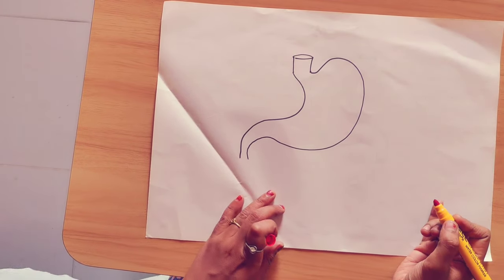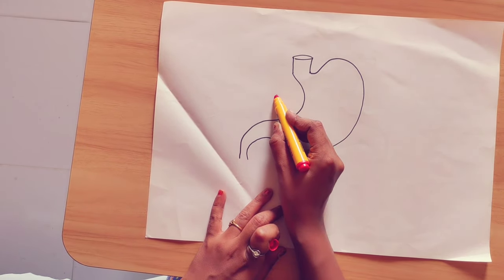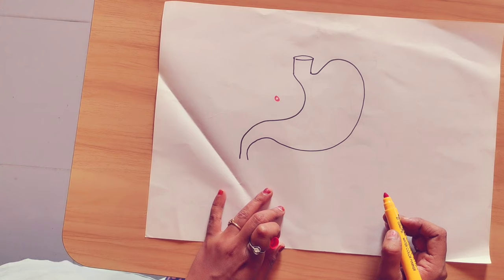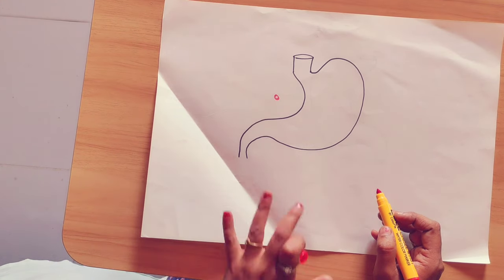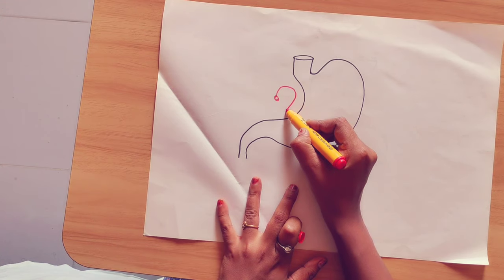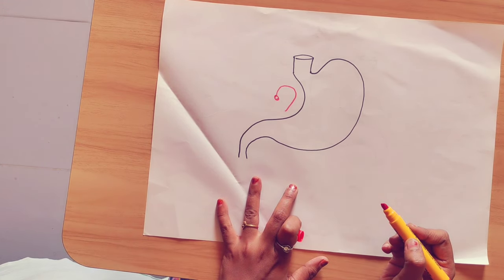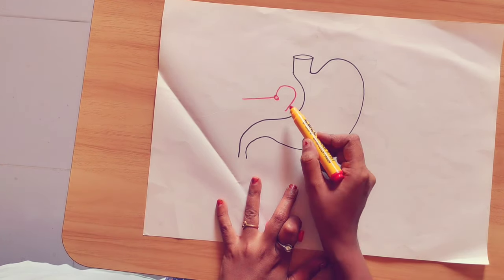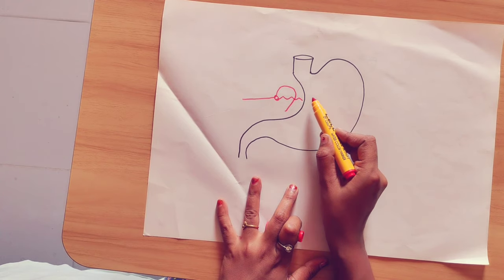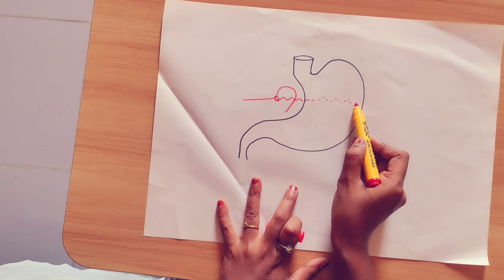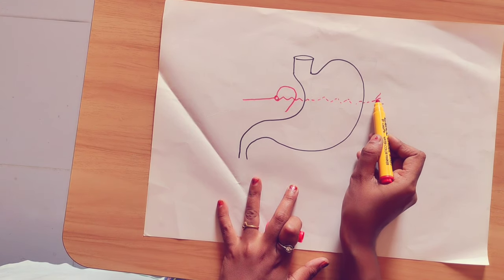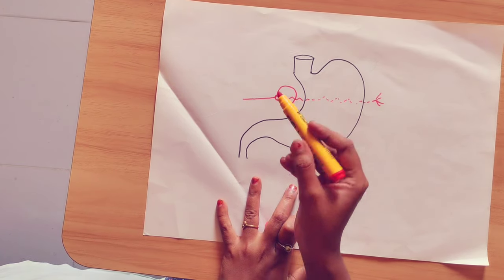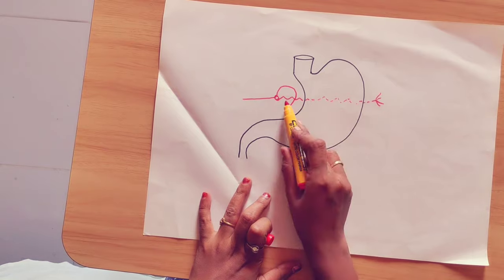Now coming to the blood supply of the stomach. There is a celiac trunk, which is an anterior branch of the abdominal aorta. The celiac trunk has three main branches: one is the left gastric artery, second is the common hepatic artery, and third is the splenic artery.